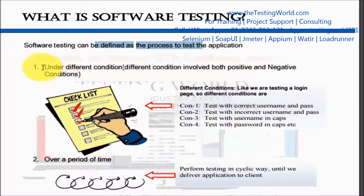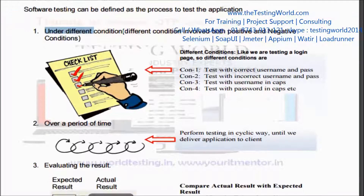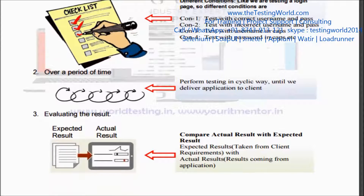The second point is testing over a period of time. Whenever we go for testing it will be a cyclic process — I am testing the application today, then after 10 days, then after one month, three months, five months. We test the application in a cyclic manner until we deliver the application to the client.